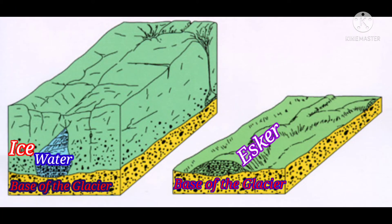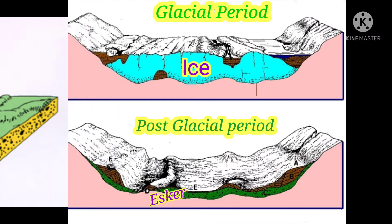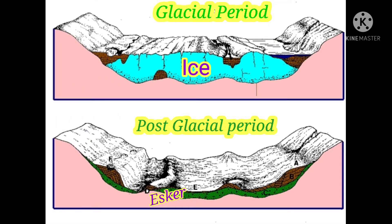Let's know the formation of the Escar. Escars are generally developed at the base of the glacier, where glacial meltwater flows through a tunnel. Then sediments are deposited within this tunnel. Over time it gets filled up with sediments. After the glacier retreats, these sediments develop a ridge-shaped landform, which is known as Escar.